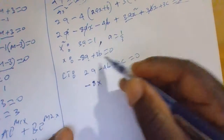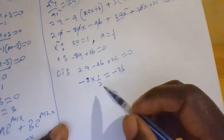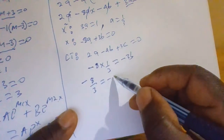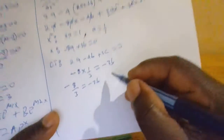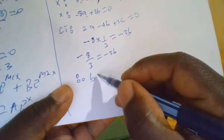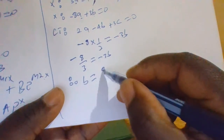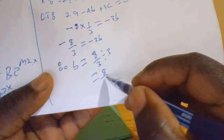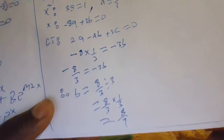Substituting a equals 1/3 into negative 8a plus 3b equals 0: negative 8 times 1/3 plus 3b equals 0. Solving for b gives 3b equals 8/3, so b equals 8/3 divided by 3, which equals 8 over 9.